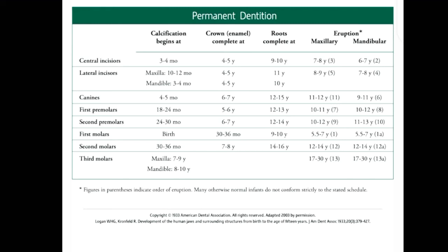For permanent dentition, every tooth that erupts takes about four years for root completion. The first permanent molars erupt at 5.5 to seven years, followed by maxillary and mandibular incisors at six to nine years. Mandibular canines and premolars appear subsequently at nine to thirteen years. Both maxillary and mandibular second molars erupt at twelve to fourteen years, and third molars erupt at seventeen to thirty years, as in most cases they remain impacted or are completely missing.